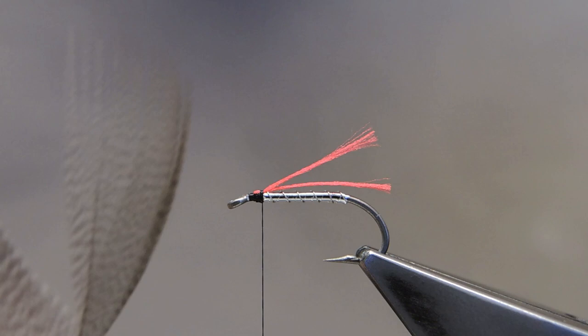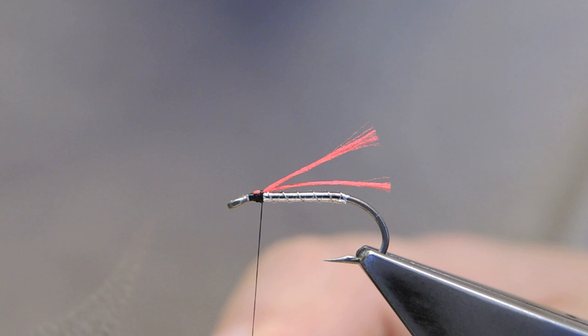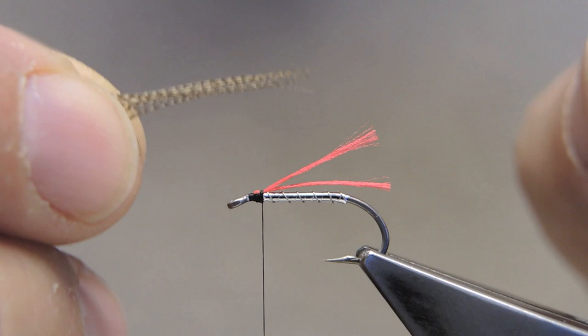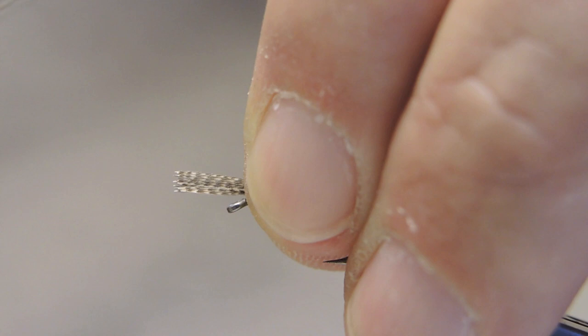Over this will come some Bronze Mallard. Just a few barbs. Make sure the tips are even. Then just double the bit. Make it the same length or slightly longer than the Glowbrite.